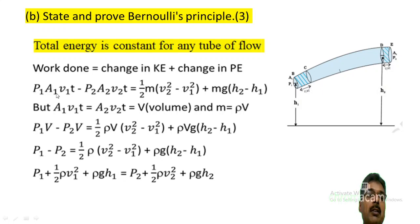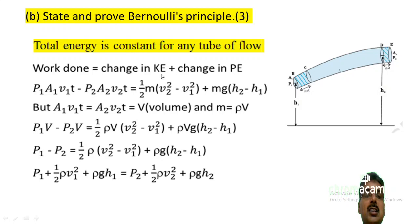The work done is P1·A1·V1·T minus P2·A2·V2·T. The change in kinetic energy is half M into V2 squared minus V1 squared, plus the change in potential energy Mg into H2 minus H1.